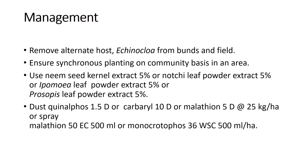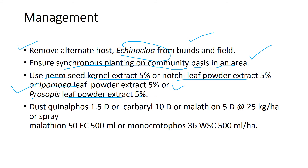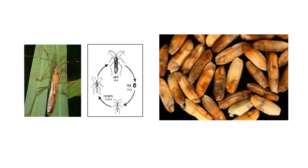Yield loss may be 10 to 40 percent. The bug emits a bad odor when disturbed in the field, which can help detect infestation. For management: remove alternate host Echinochloa from bunds and fields, ensure synchronous planting on community basis. Use neem seed kernel extract 5%, notchi leaf powder extract 5%, Ipomea leaf powder extract 5%, or Prosopis leaf powder extract 5%.